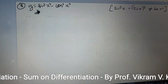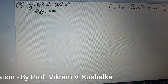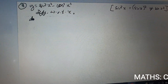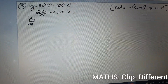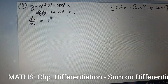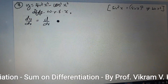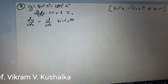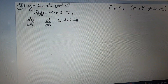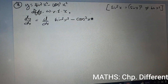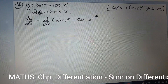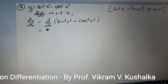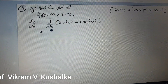First, I'll write: differentiate with respect to x. So dy/dx = d/dx of [sin²(x²) - cos²(x²)]. This is of the form u minus v — it is neither uv nor u/v, it is u minus v. So I'm going to separate both trigonometric functions.